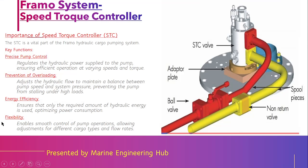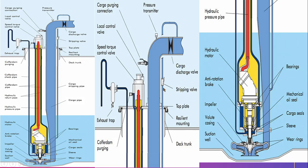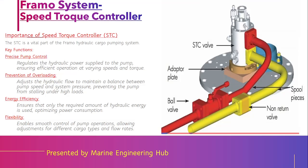This provides energy efficiency optimization. The fifth function is flexibility. On a cargo vessel we carry different types of cargo — palm oil, which is very thick, or chemicals with different viscosities and densities. To pump all types of cargo we need to vary the flow rate, which is done by regulating the hydraulic oil flow via the speed torque controller. If asked in an examination about the importance of the speed torque controller, mention all these functions.